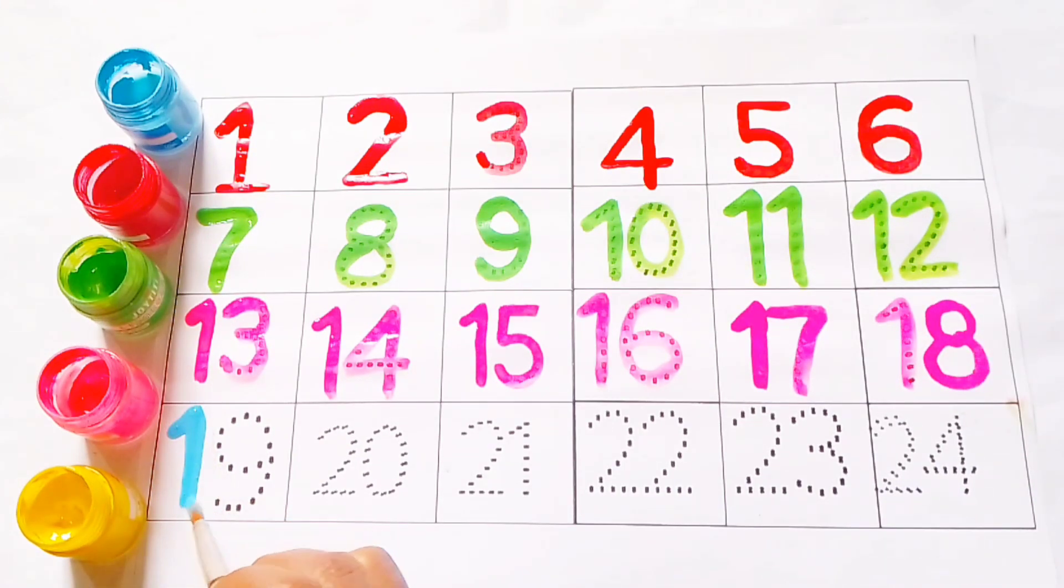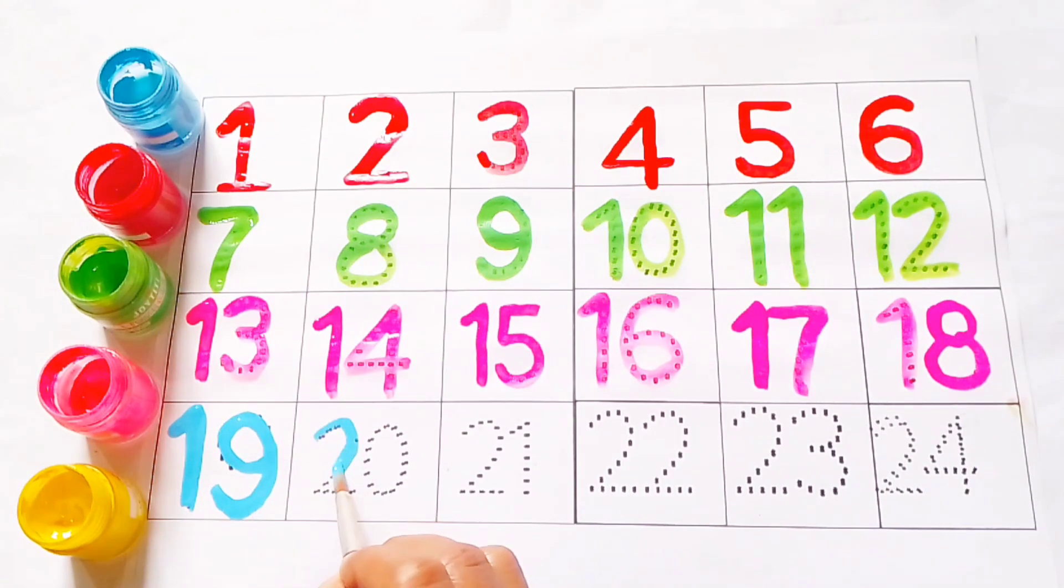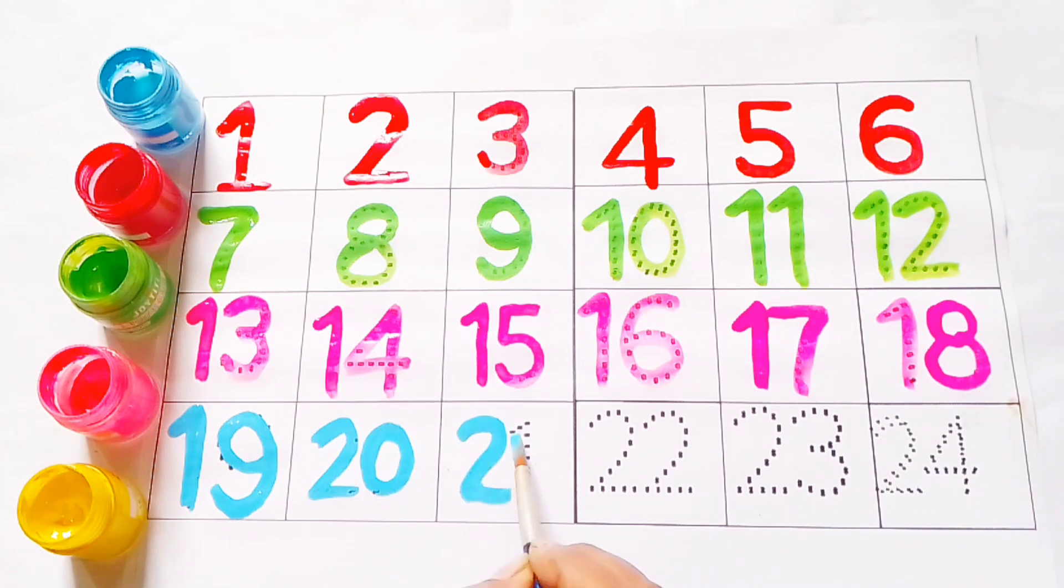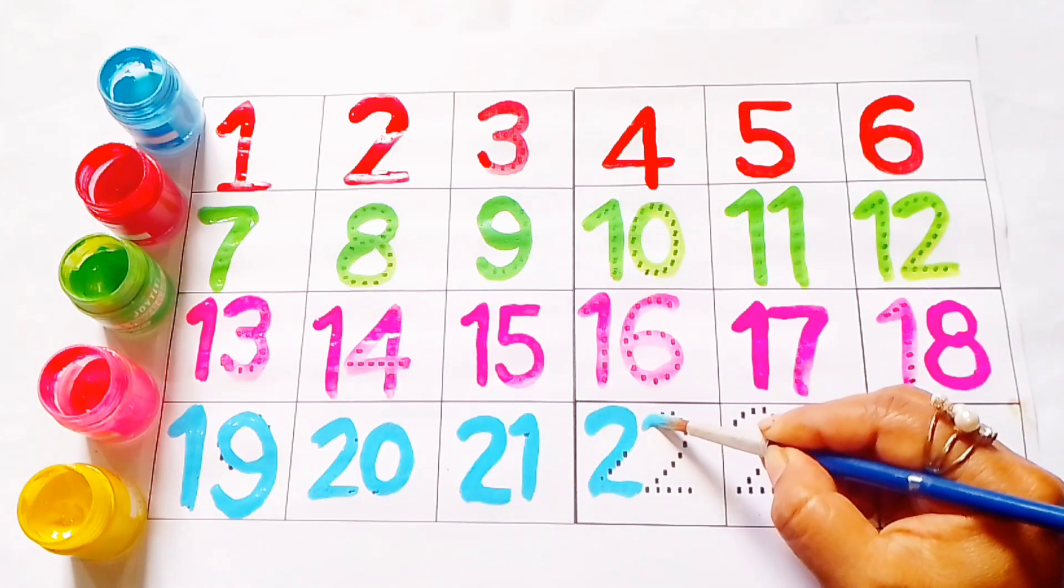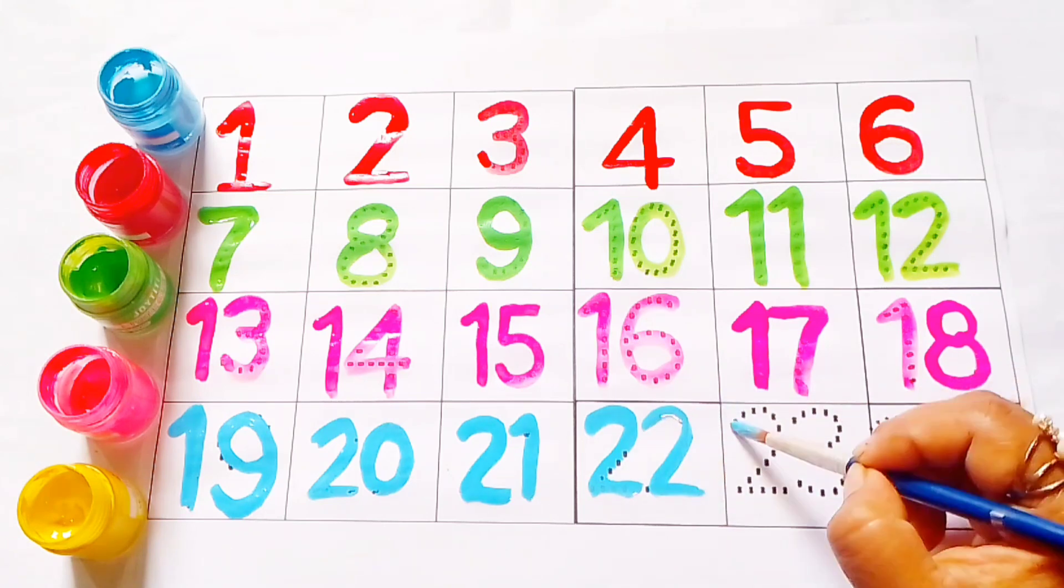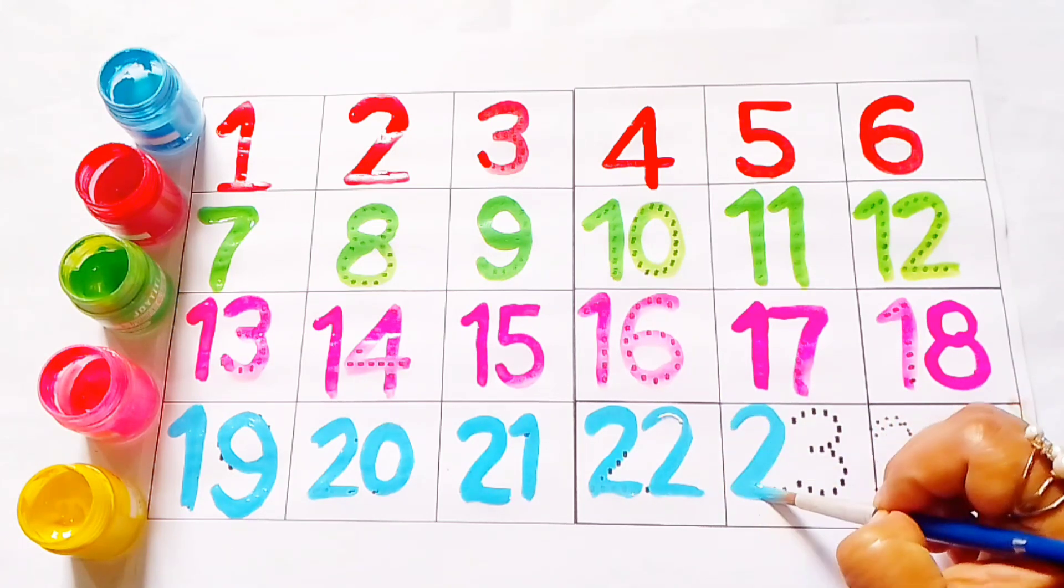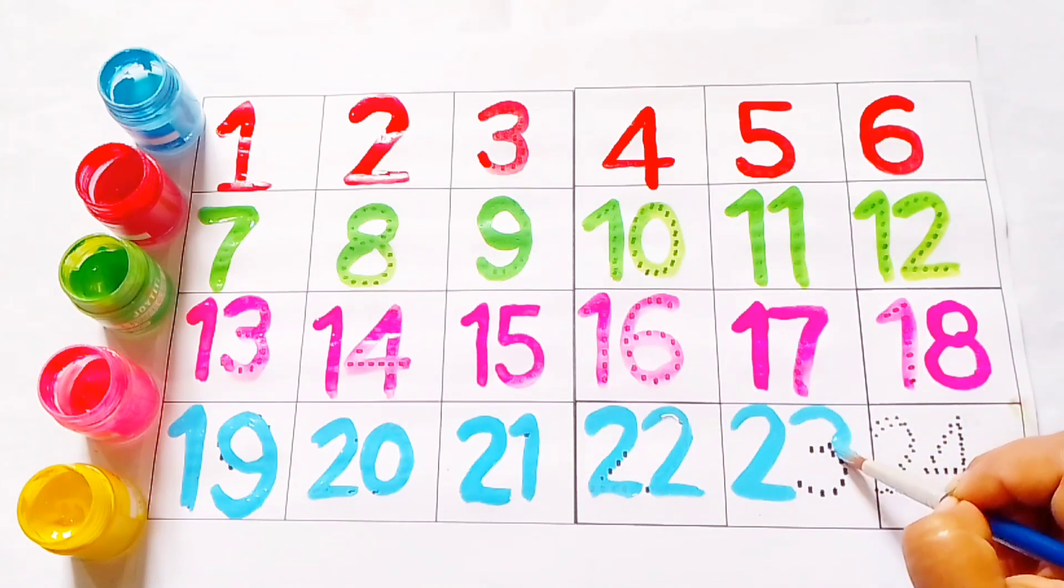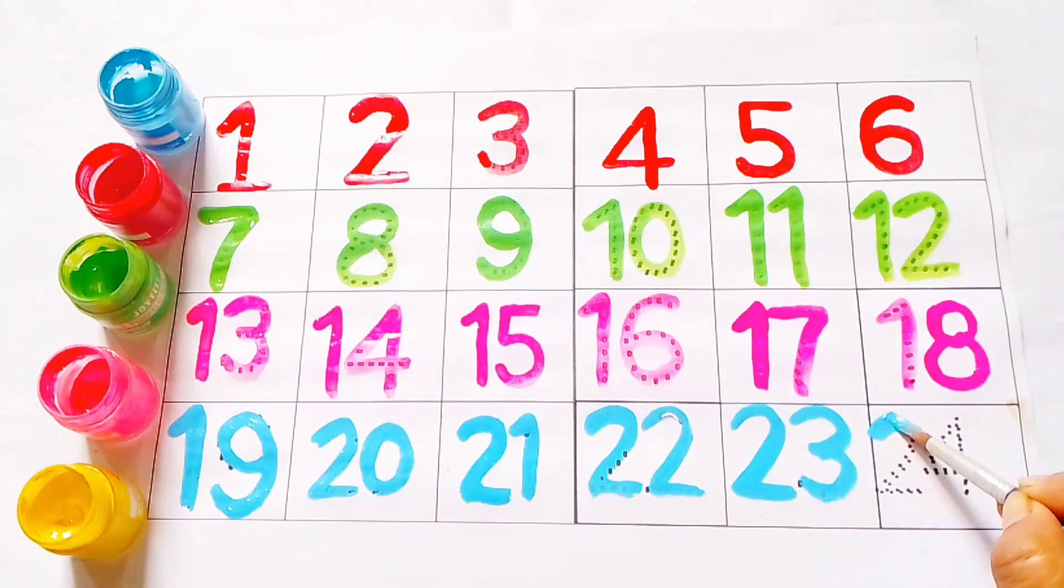Sky blue color. 19, 20, 21, 22, 23. Twenty-three. Twenty-four. Two, four, twenty-four.